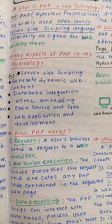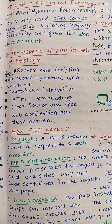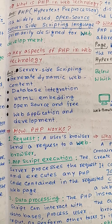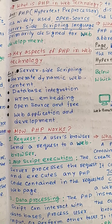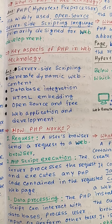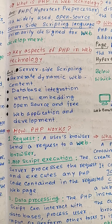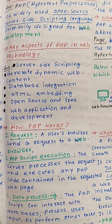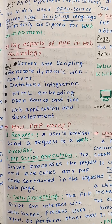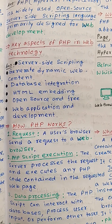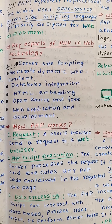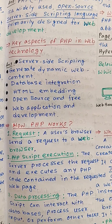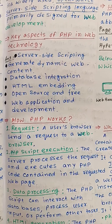Key aspects of PHP in web development: First, server-side scripting — it generates dynamic web content. Database integration, HTML embedding, open source and free, and full web application development.